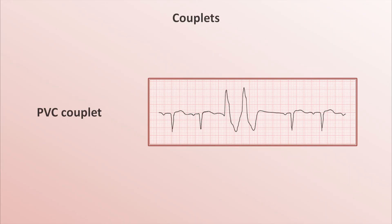Moving on, I wanted to show an example of a couplet — specifically a PVC couplet, which refers to two PVCs in quick succession, usually of the same morphology. It will look like the first two beats of a ventricular tachycardia but without the rest of the tachycardia. PAC couplets also exist.